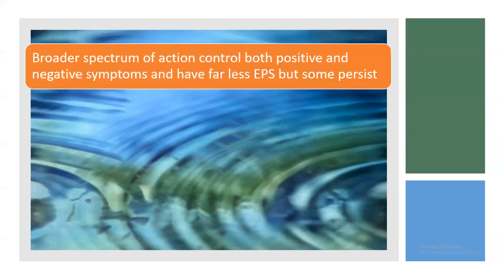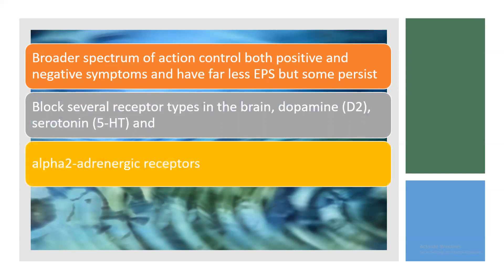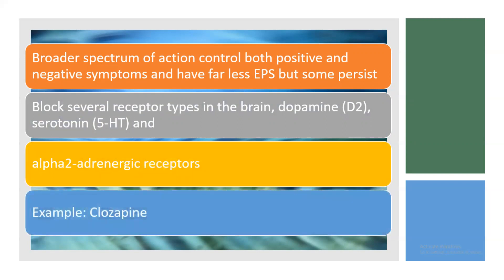Atypical antipsychotics have a broader spectrum of action — they control both positive and negative symptoms and have far less EPS, though some persist. They block several receptor types including dopamine (D2), serotonin (5-HT), and alpha-2 adrenergic receptors. For example, clozapine is a safer drug to use as an antipsychotic.